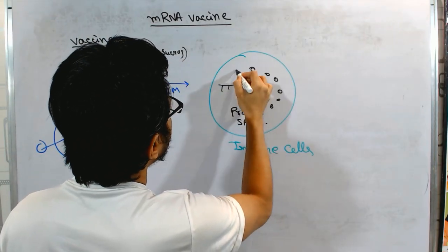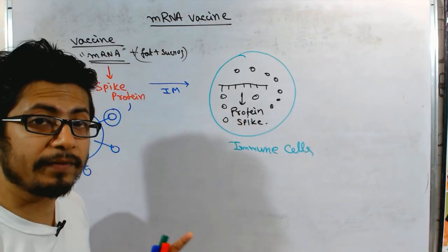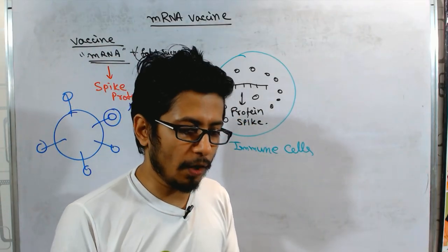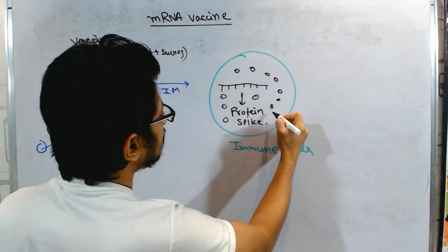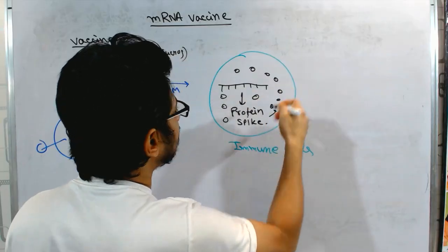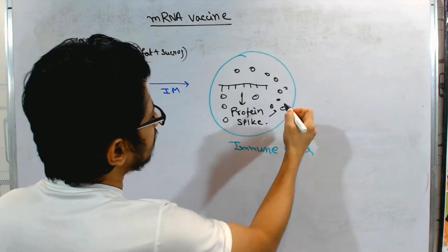they know that this protein is not our own body protein. And the immune system has this special sense of detecting what is self, what is non-self. And once they make this protein, the spike protein, they immediately know that this is a non-self protein. This is not a self protein. So they destroy itself.